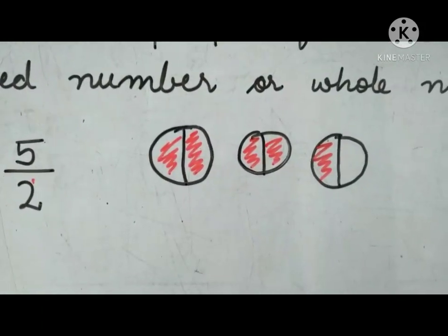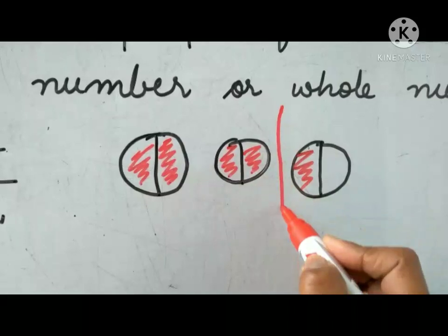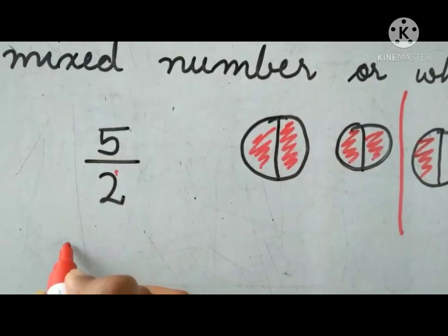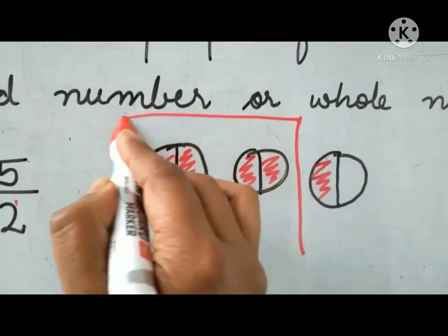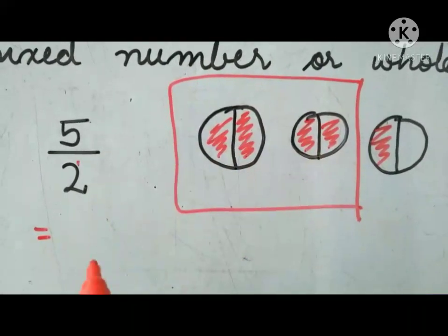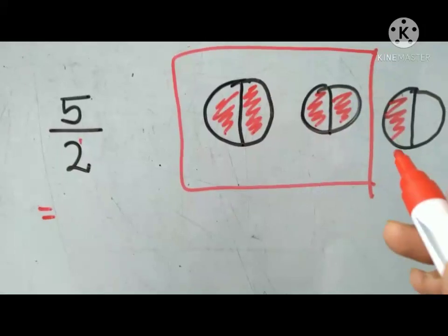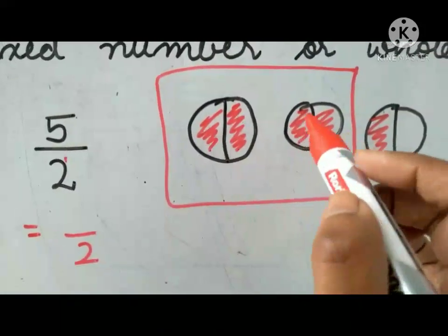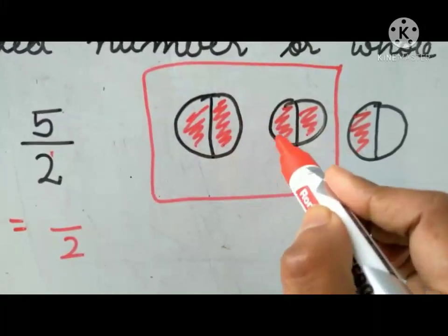Now here in this figure you can see these two are whole numbers — draw a line here. Now we'll first take this figure. What is the denominator? Two. Two will be the denominator because each figure is divided into two equal parts. Now in this one, how many parts are shaded? One, two, three, four — four parts are shaded.